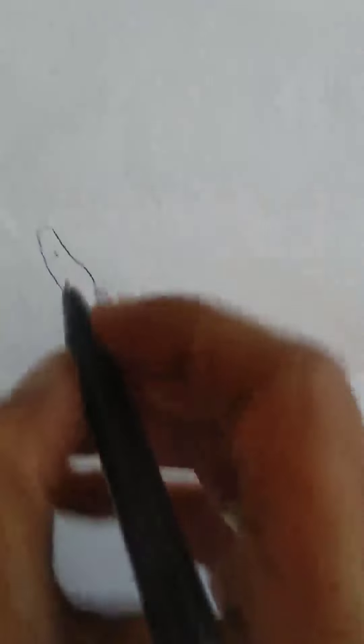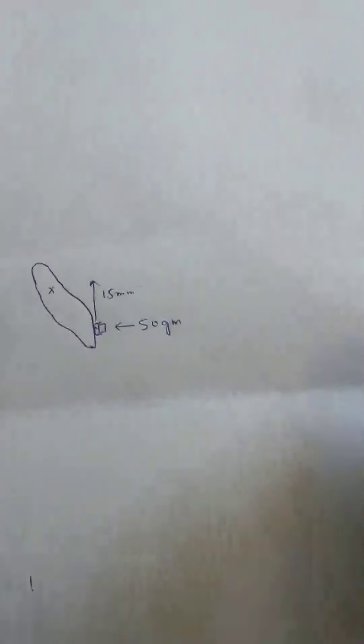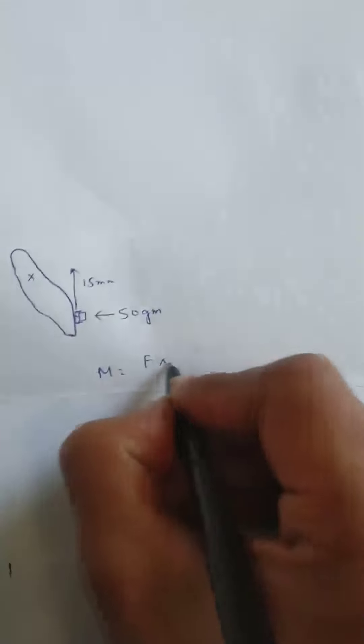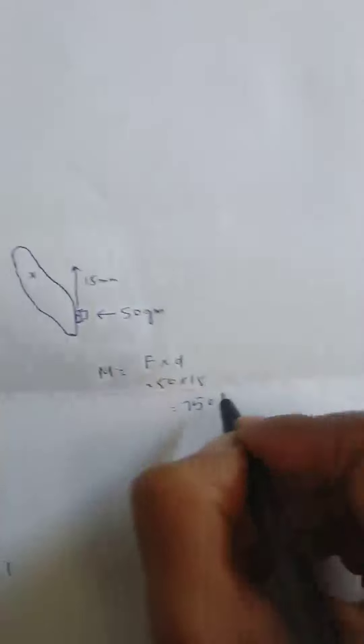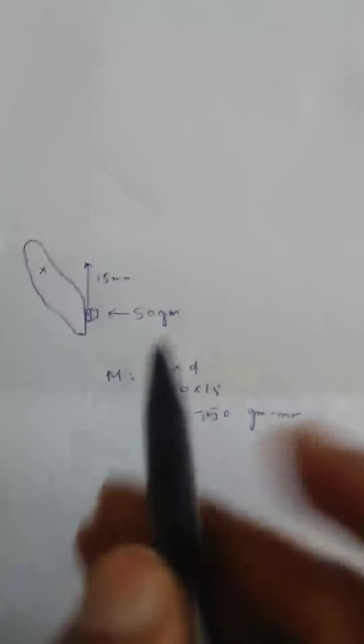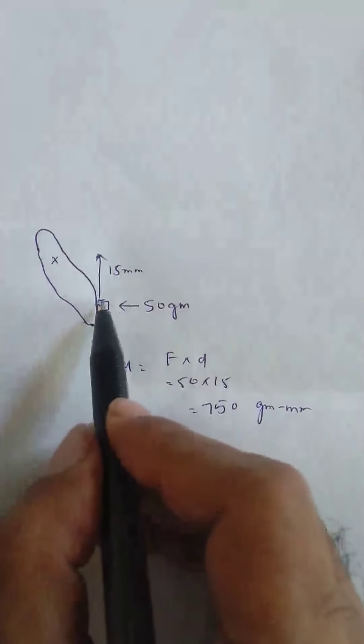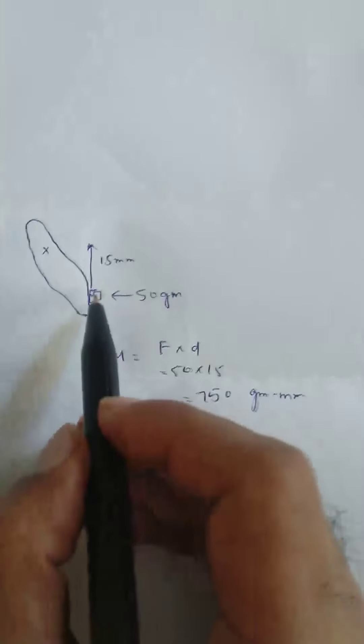How do we find the moment? Take the perpendicular distance from the point of force application to the center of resistance, which is 15 mm. So it's 50 grams × 15 mm = 750 gram-mm, which will be the moment. So with 50 grams of force on the tooth, a moment of 750 gram-mm is produced, causing the tooth to rotate. This is called simple tipping.